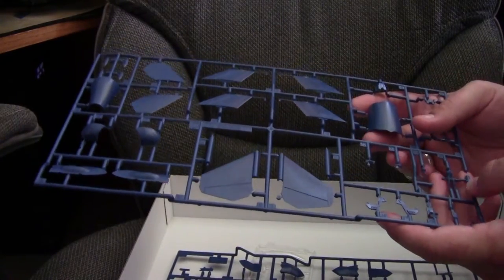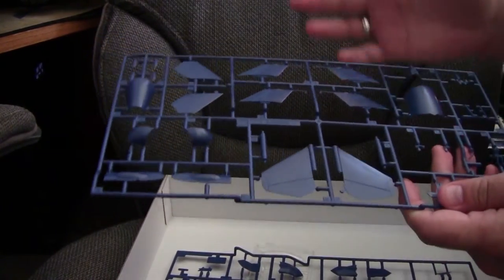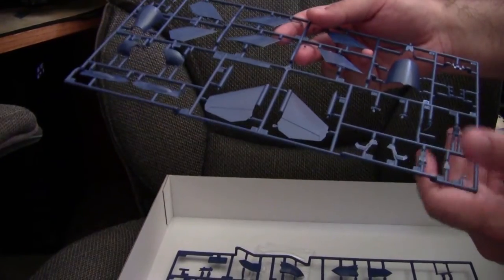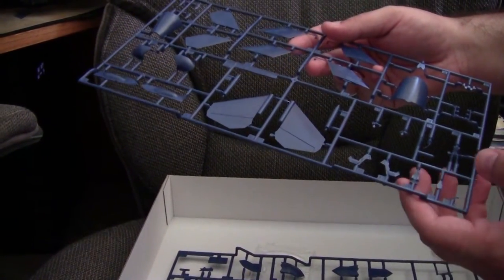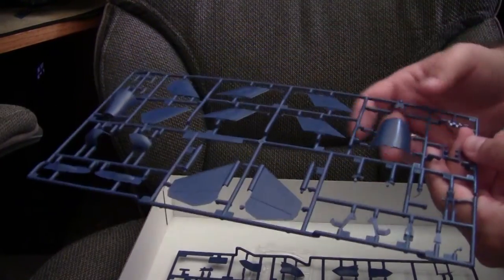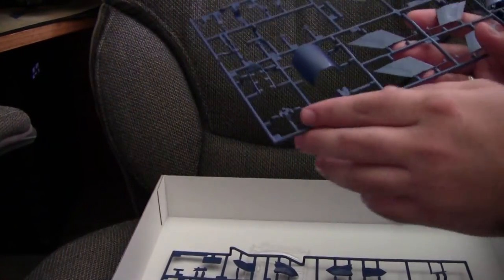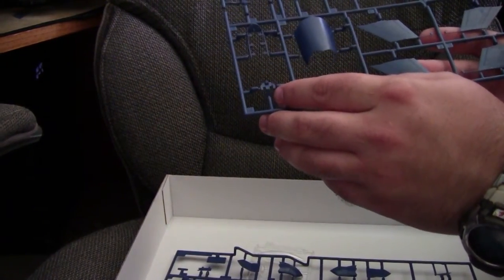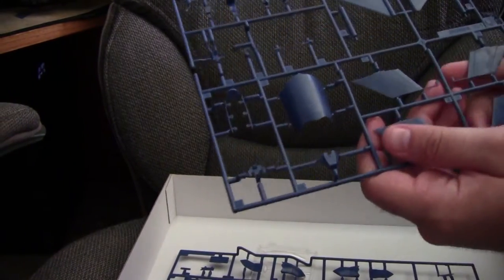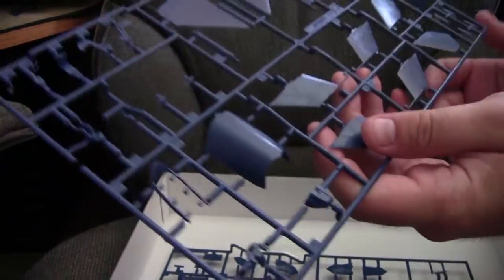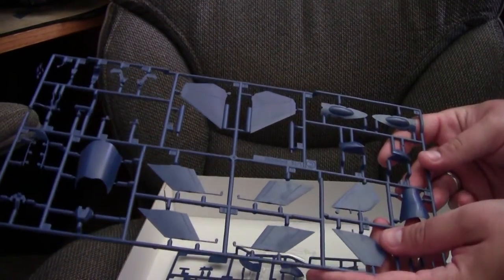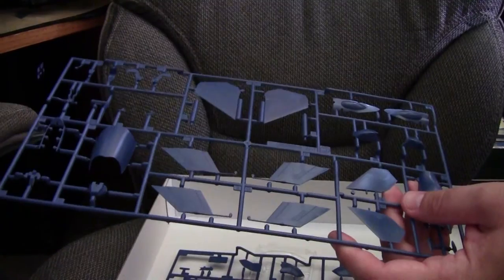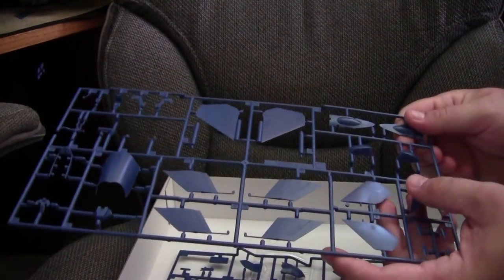Continuing on, we have the second main sprue, which has cockpit details including pilot, control stick, ejection seat, and other details, as well as the main instrument panel which is primarily detailed with a decal. We also have the canards and various other odds and ends parts, including the vertical tail.